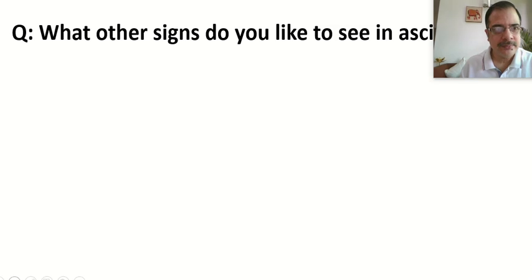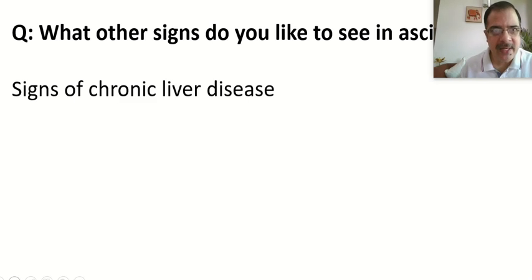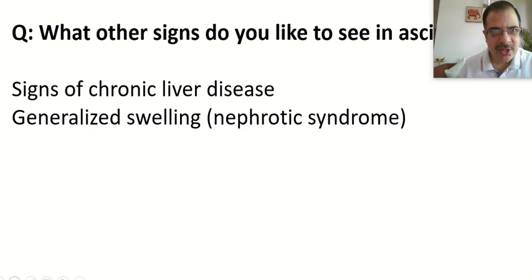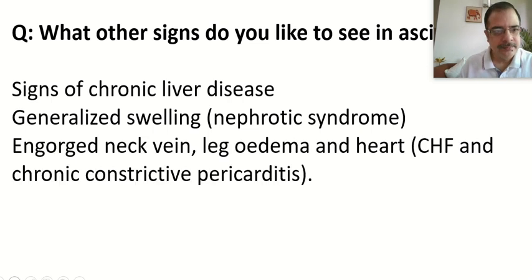Other signs to look for in a patient with ascites are signs of chronic liver disease — the most common cause of ascites. These include spider angiomas, Dupuytren's contracture, and gynecomastia. We also look for generalized swelling: facial edema, facial puffiness, pitting edema in the legs, and sacral edema in non-ambulatory patients. Generalized swelling gives a clue to nephrotic syndrome with anasarca.